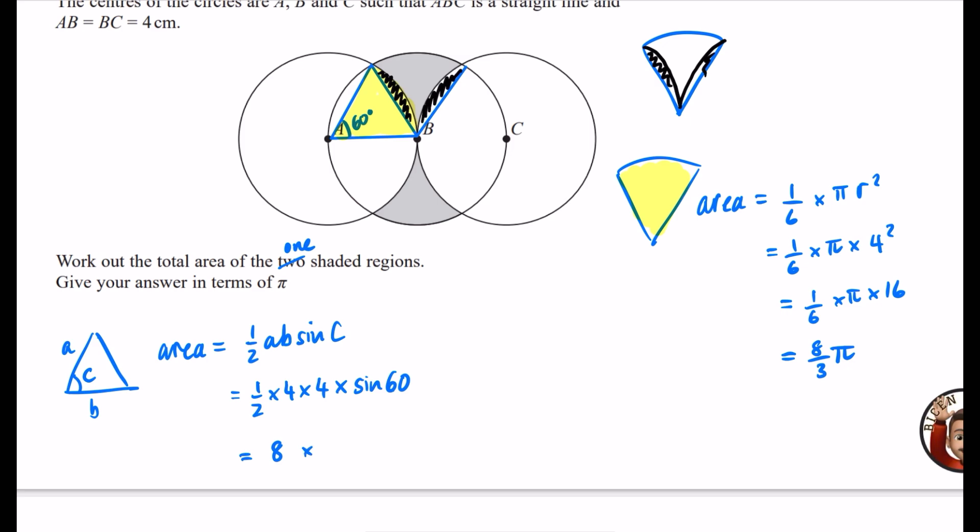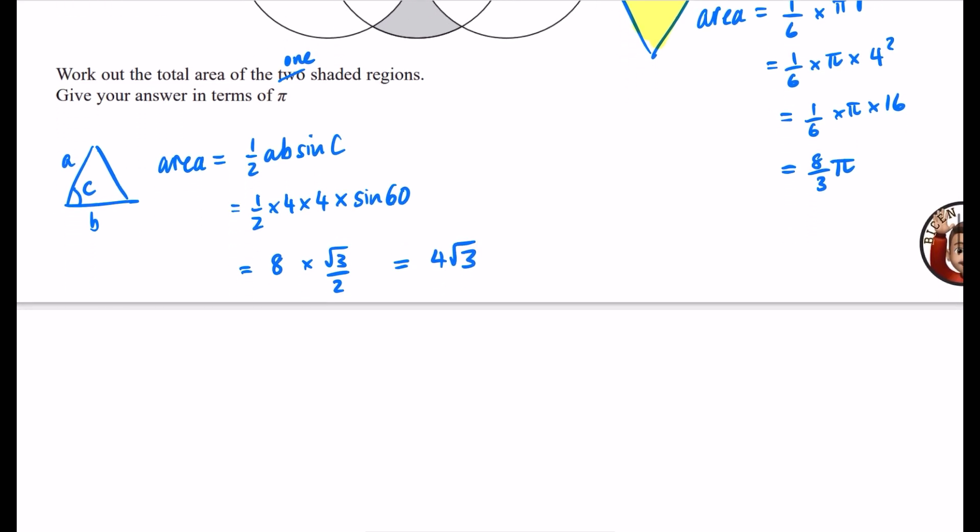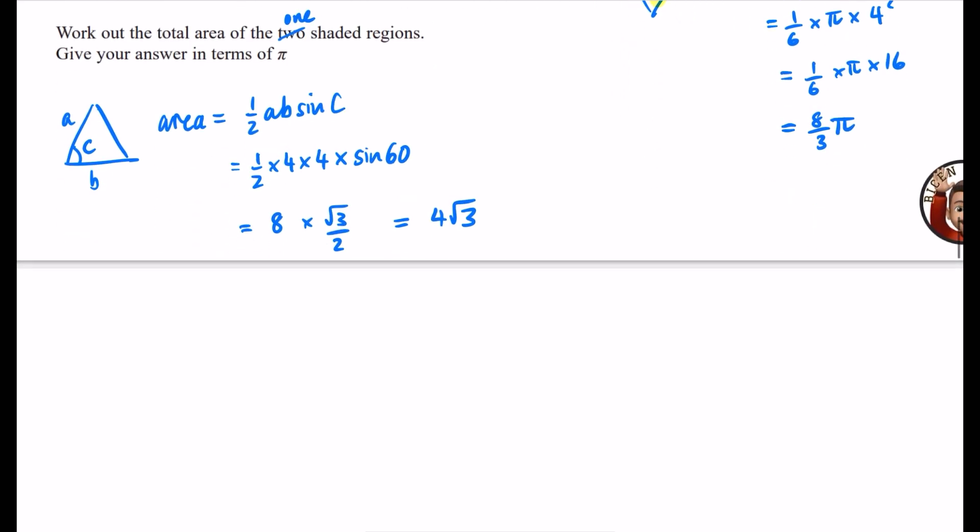And then sine 60, that's one that you should memorize. Sine 60 is root 3 over 2. So 8 times root 3 over 2. Well, the 8 and the divide by 2 gives me a 4. So I get 4 root 3. So now, if I want to find out the area of this little black section, that kind of curved bit, the area of this is going to be equal to the area of the sector minus the area of the triangle. And so the area of the sector was 8 over 3 pi, and the area of the triangle was 4 root 3.